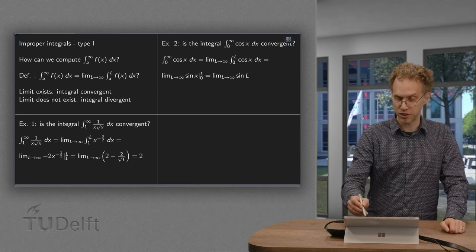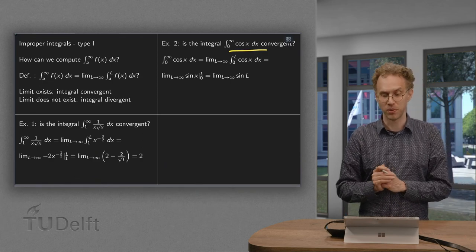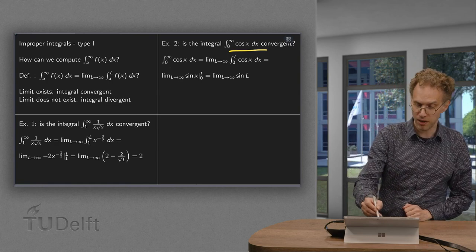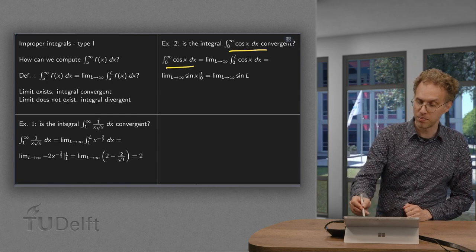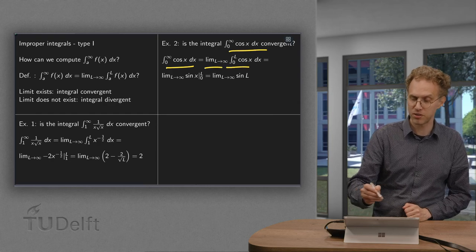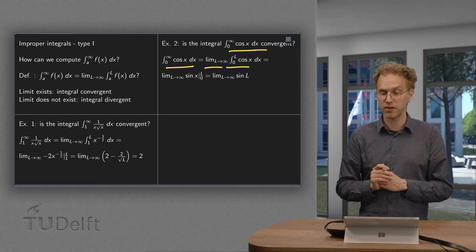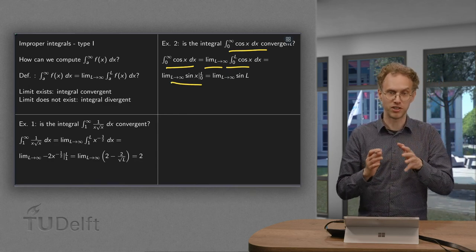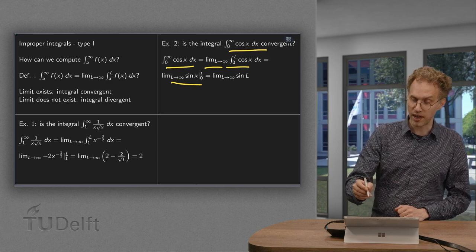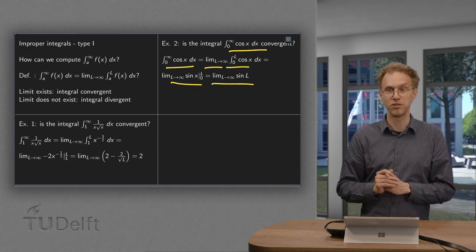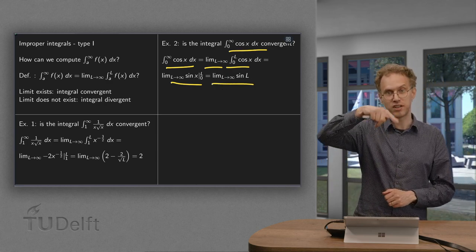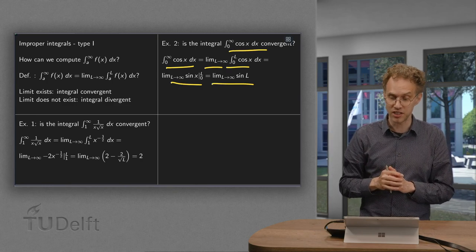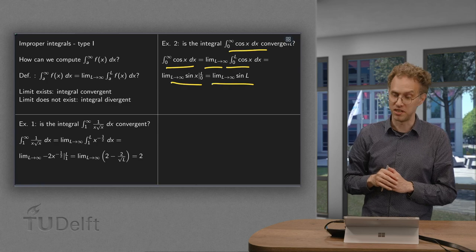Next: the integral from 0 to infinity of cosine of x. We do the same trick — replace the upper boundary infinity by l and then take the limit as l goes to infinity. An antiderivative of cosine is sine. Plugging in the boundaries: the lower boundary gives sine of 0 equals 0, so we end up with sine of l. Taking l to infinity, the sine just keeps on wiggling — it doesn't go to infinity, but the limit does not exist — so this integral is divergent.